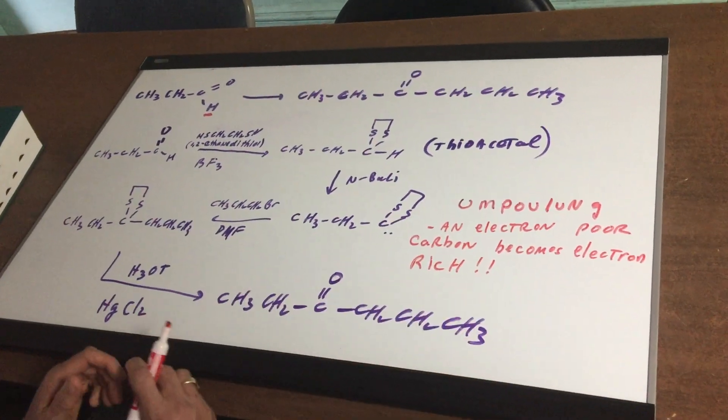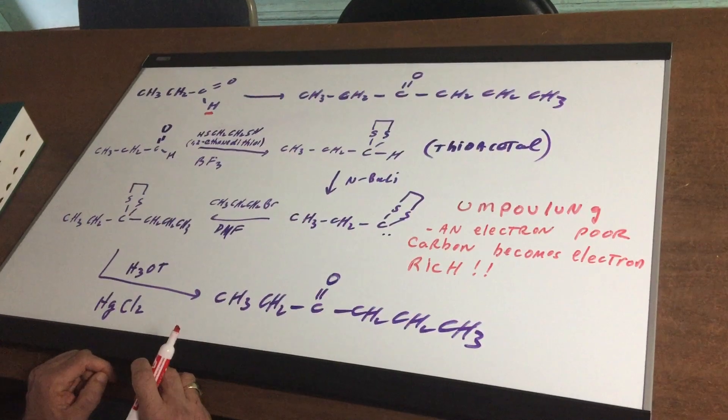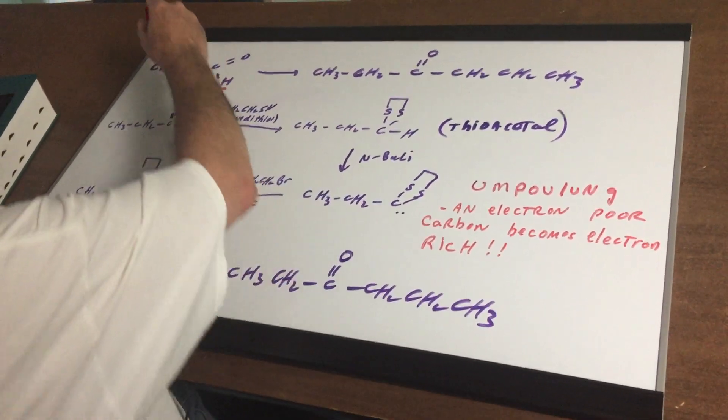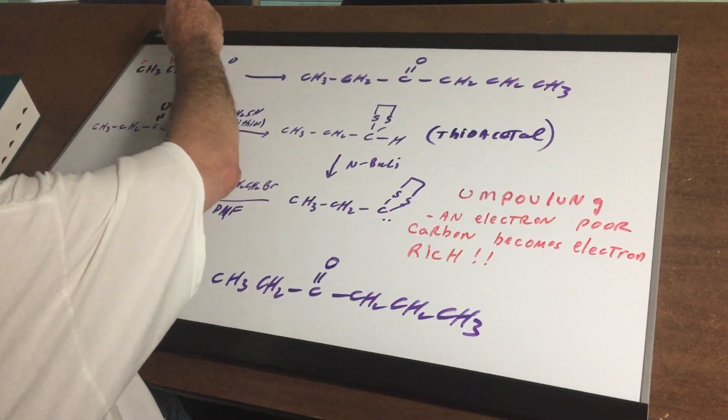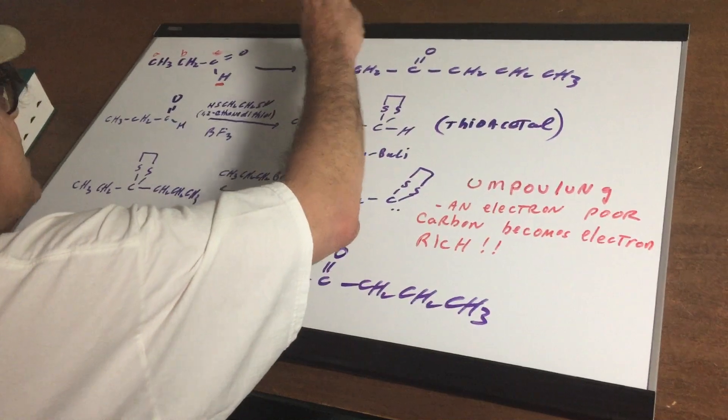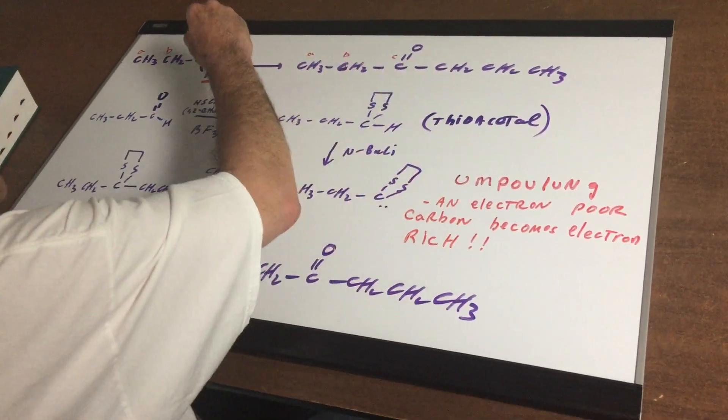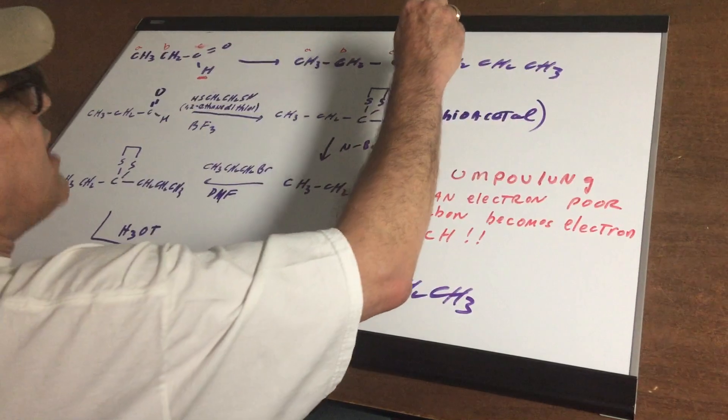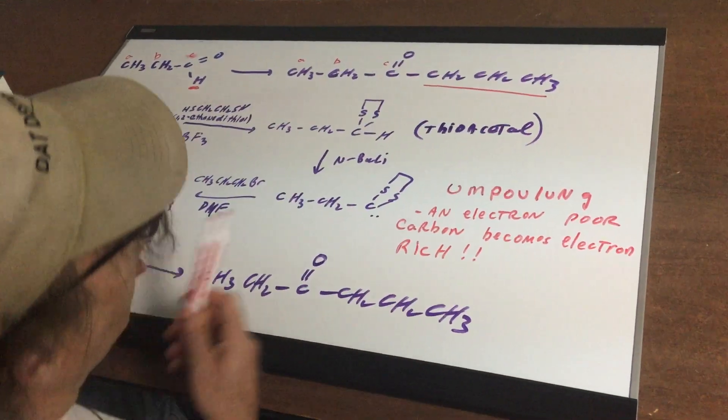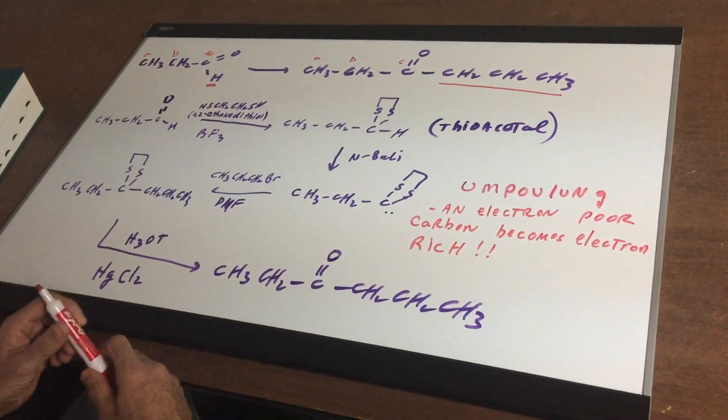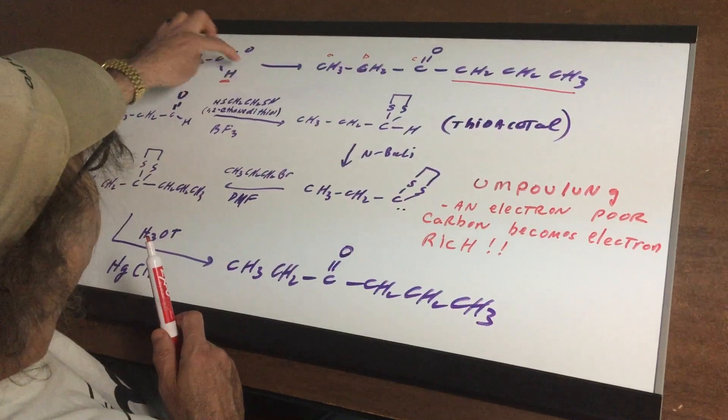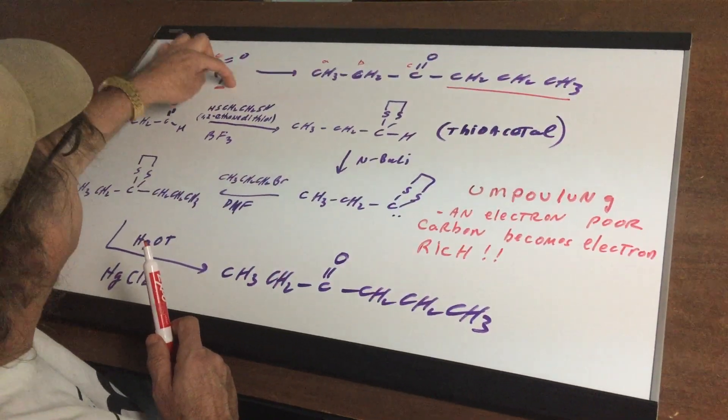What I'm gonna do in this problem is I'm gonna transform an aldehyde into a ketone. Now as you can see, if you label this as carbon ABC here and you can see there's ABC here, it looks like I gotta remove off this H and I gotta add on this propyl arm. Now I'm hoping you all remember that an aldehyde H, the one that's directly attached to this carbon, is not acidic.